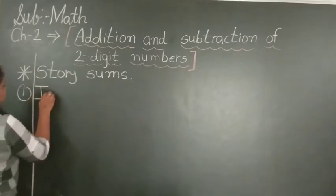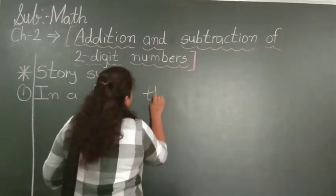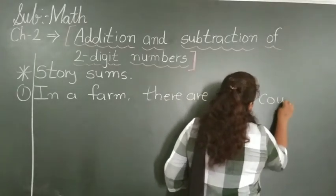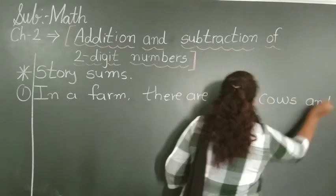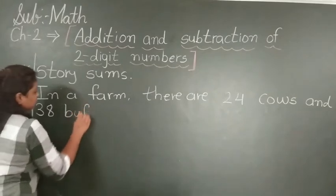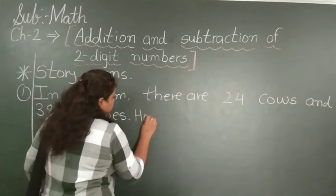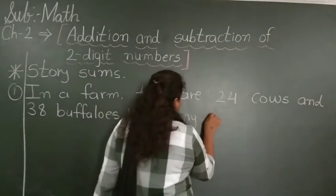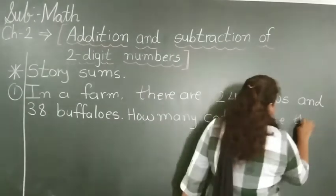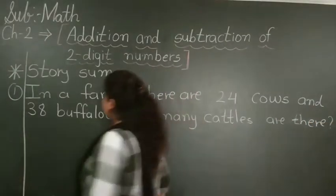In a farm, there are 24 cows and 38 buffaloes. So how many cattle are there? So once again we will read the question.